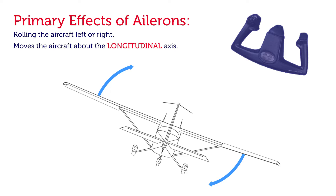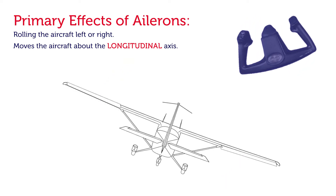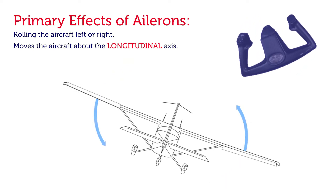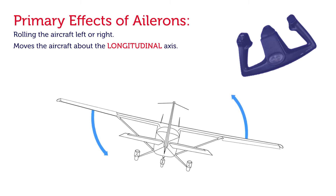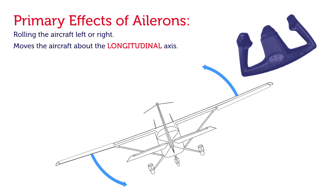Similarly, when turning to the left, we roll the control column to the left. The right aileron deflects down and the left aileron deflects up. Again we're changing the chord line and angle of attack, generating more lift, and that lifting force gets the aircraft to roll to the left.